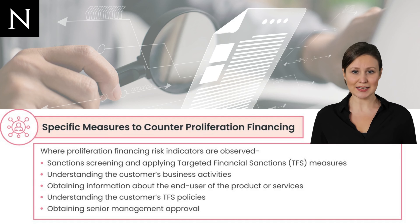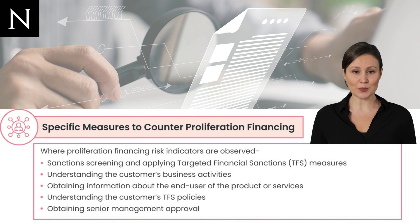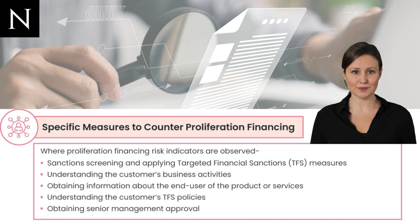Regulated entities must assess the proliferation financing risk and deploy adequate controls to manage it. Some key counter-proliferation financing measures include: one, implementing the targeted financial sanctions (TFS) regime effectively to screen customers, including their beneficial owners, and applying TFS measures when a designated person is identified.